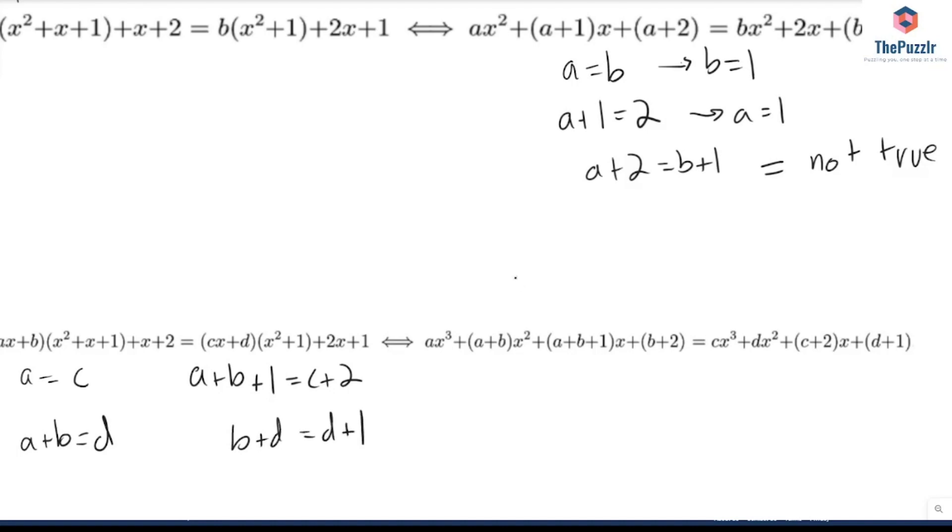Now even though this is a four variable system, it's not a hard four variable system. For example, we know that a equals c, so we can substitute that into here to get a + b + 1 equals a + 2. A's cancel out. So that b equals 1.